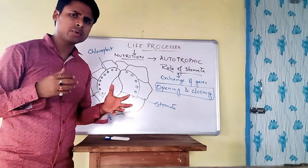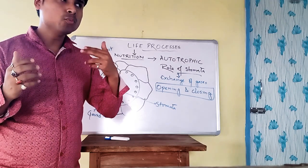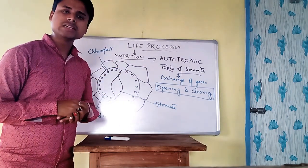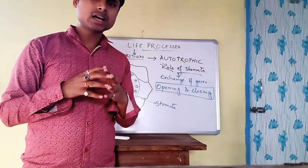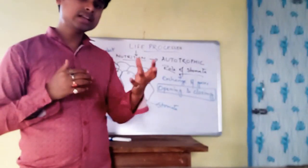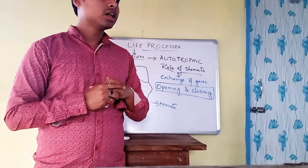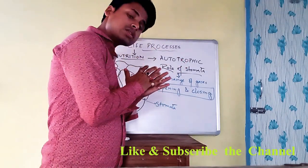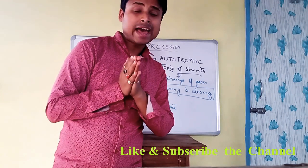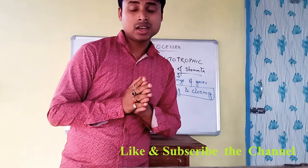This is how the stomata open and close — because if it remains always open, transpiration may occur. Transpiration is the removal of water vapor from the plant. We have seen how photosynthesis takes place, where plants prepare their own food. If the food is utilized it remains as glucose; if not utilized, it gets stored in the form of starch. The heterotrophic process we will see in the next video. Thank you.